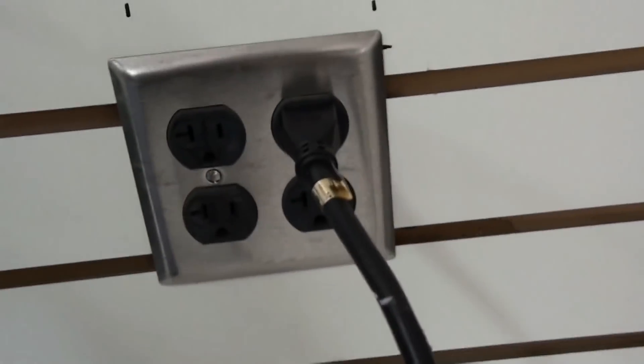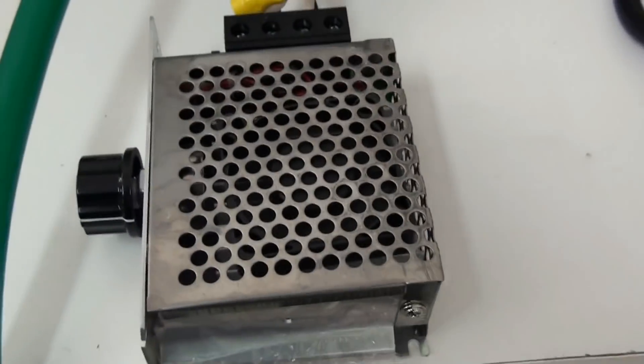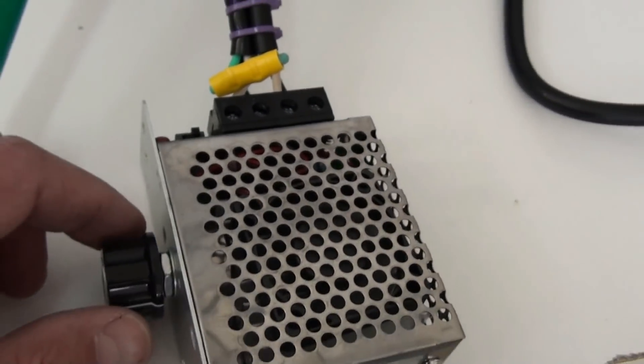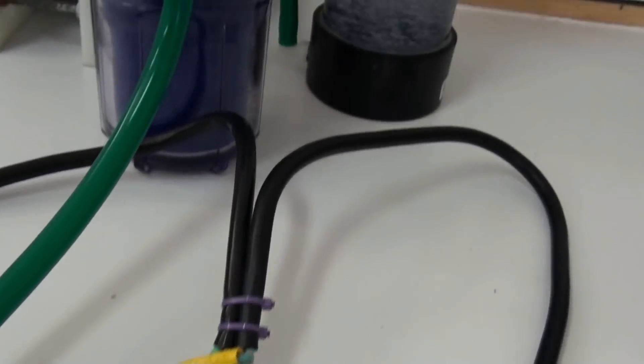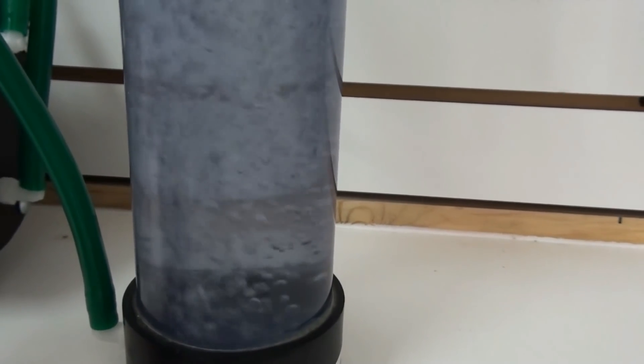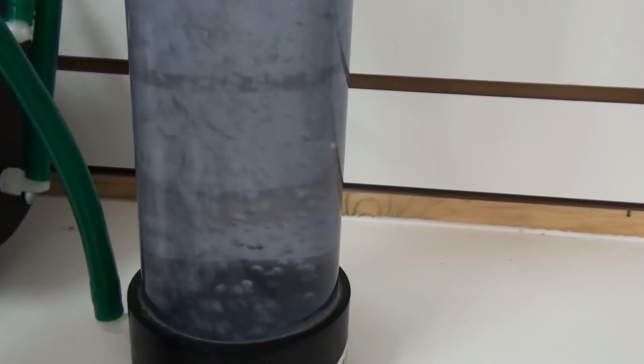And then here's the output here that goes over to our torch. So you just plug it into a normal wall socket. It comes over here to our variable controller where you can control the amount of gas that's being produced. As I turn it down, you can see that the gas is also going down. So that gives you a variable production.